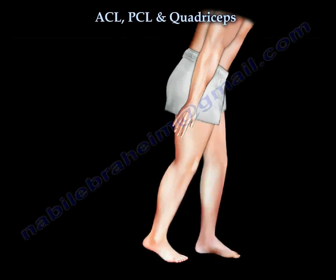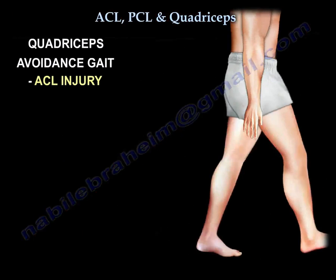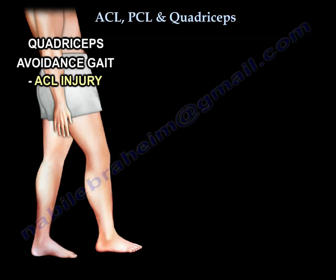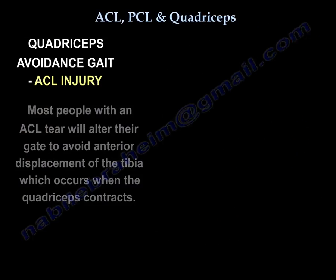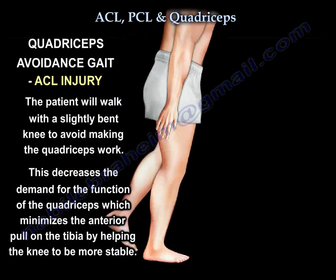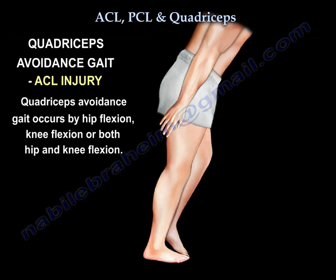The quadriceps avoidance gait occurs in ACL injury. Most people with an ACL tear will alter their gait to avoid anterior displacement of the tibia, which occurs when the quadriceps contracts. The patient will walk with a slightly bent knee to avoid making the quadriceps work. This will decrease the demand for the quadriceps, minimizing the anterior pull on the tibia and helping the knee to be more stable.